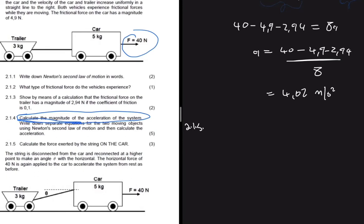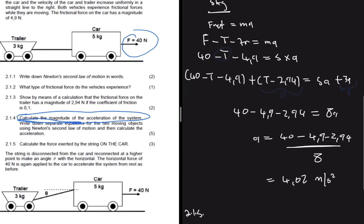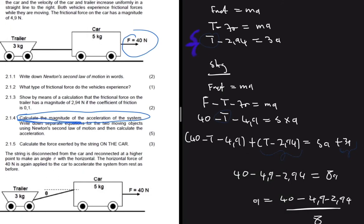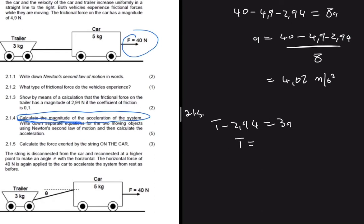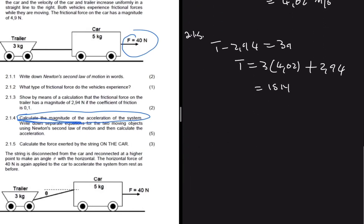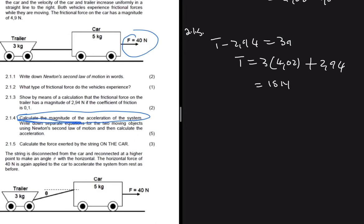Question 2.1.5 asks us to calculate the force exerted by the string on the car — that is, the tension. Using the 3 kg trailer equation: T − 2.94 = 3a. Now that we know a = 4.02, we get T = 3 × 4.02 + 2.94 = 15 newtons. The tension pulling the car backwards and pulling the trailer forward is 15 newtons.